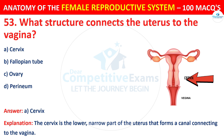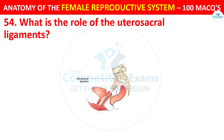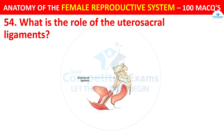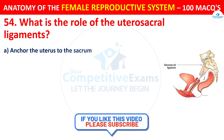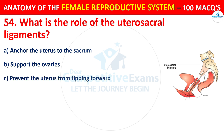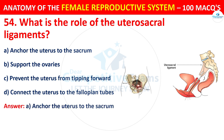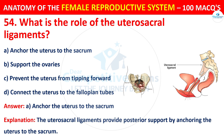Question number 54. What is the role of the uterosacral ligaments? Options: anchor the uterus to the sacrum, support the ovaries, prevent the uterus from tipping forward, or connect the uterus to the fallopian tubes. The correct answer is A — anchor the uterus to the sacrum. The uterosacral ligaments provide posterior support by anchoring the uterus to the sacrum.